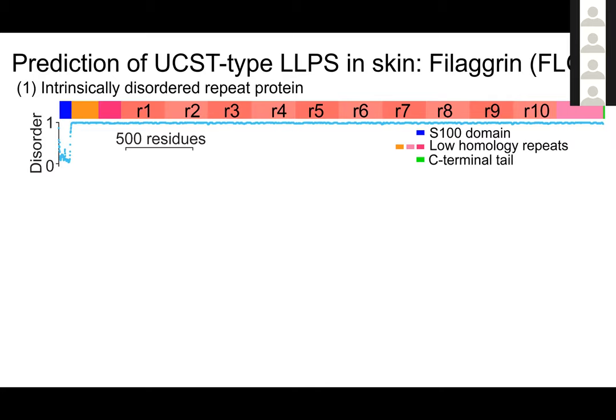That led to a prediction. One of our first predictions was an interesting protein named filaggrin, which we thought had all the requirements to exhibit UCST-type phase separation behavior. Here is a snapshot of what that protein looks like.